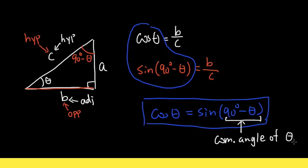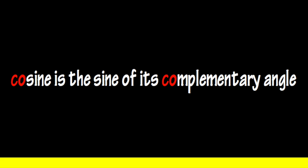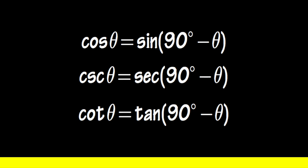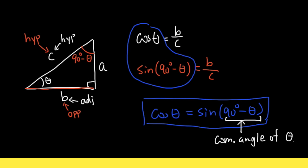And therefore, cosine is called the cosine — the complement's sine. The same logic applies to cosecant and cotangent. These are the cofunction identities, and if you remember the names, you'll remember these identities much better. I hope you enjoyed this video. Please subscribe and share it with others who enjoy math. Thank you!